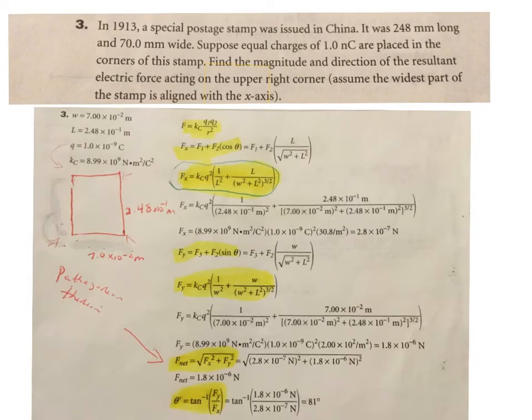Here we have example three, and it says that we have 248 millimeters long, 70 millimeters wide, equal charge of one nanocoulomb are placed in the corners of the stamp. Find the magnitude and the direction of the resultant electrical forces acting on the upper right corner, assuming the widest part of the stamp is aligned with the x-axis. Alright, so going through here, we've got our width and our length, and we've got our charge, and we've got Coulomb's constant, and we have drawn out our square stamp right here.